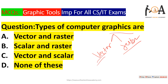We will see about vector graphics and raster graphics in our next lecture in complete detail — how they are different from each other, the advantages of each, and the file formats under vector graphics and raster graphics. So here we have simply answered: the types of computer graphics are vector graphics and raster graphics.